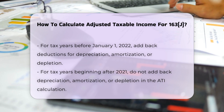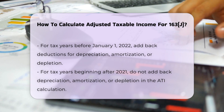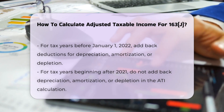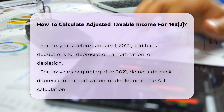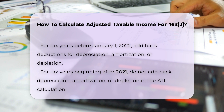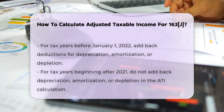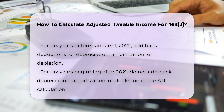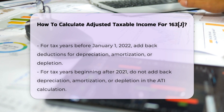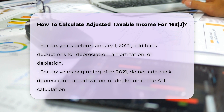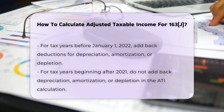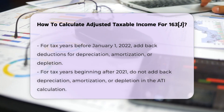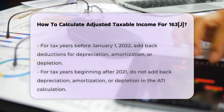For tax years beginning before January 1st, 2022, you would add back any deductions allowable for depreciation, amortization, or depletion. However, this rule no longer applies for tax years starting after 2021.